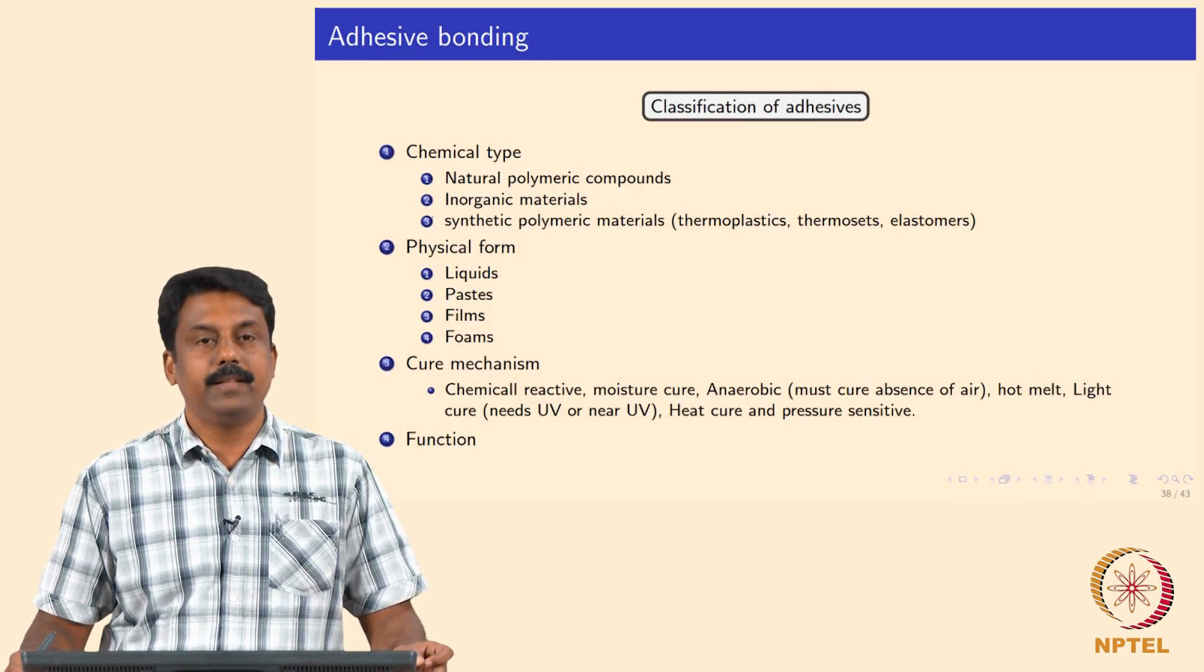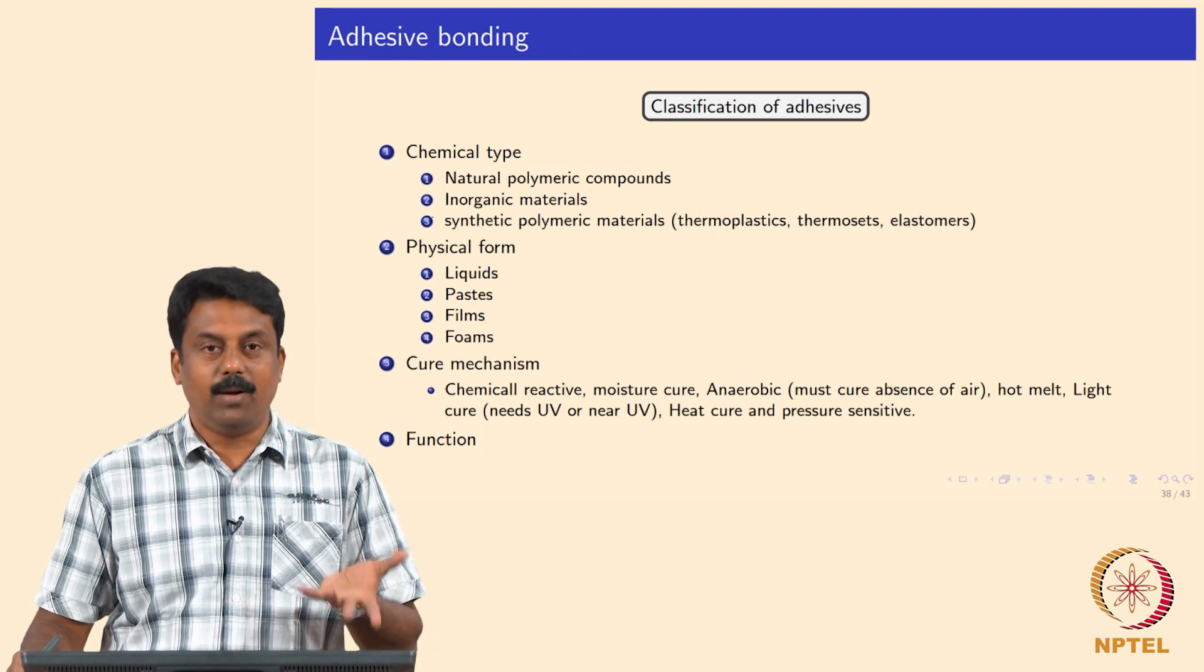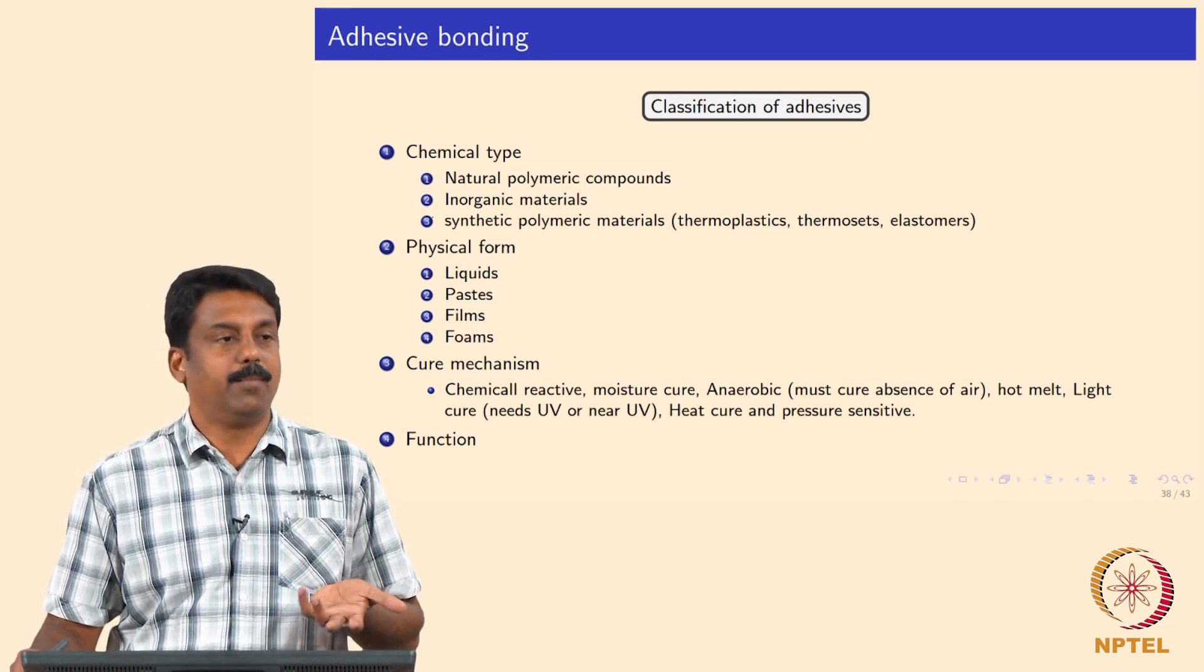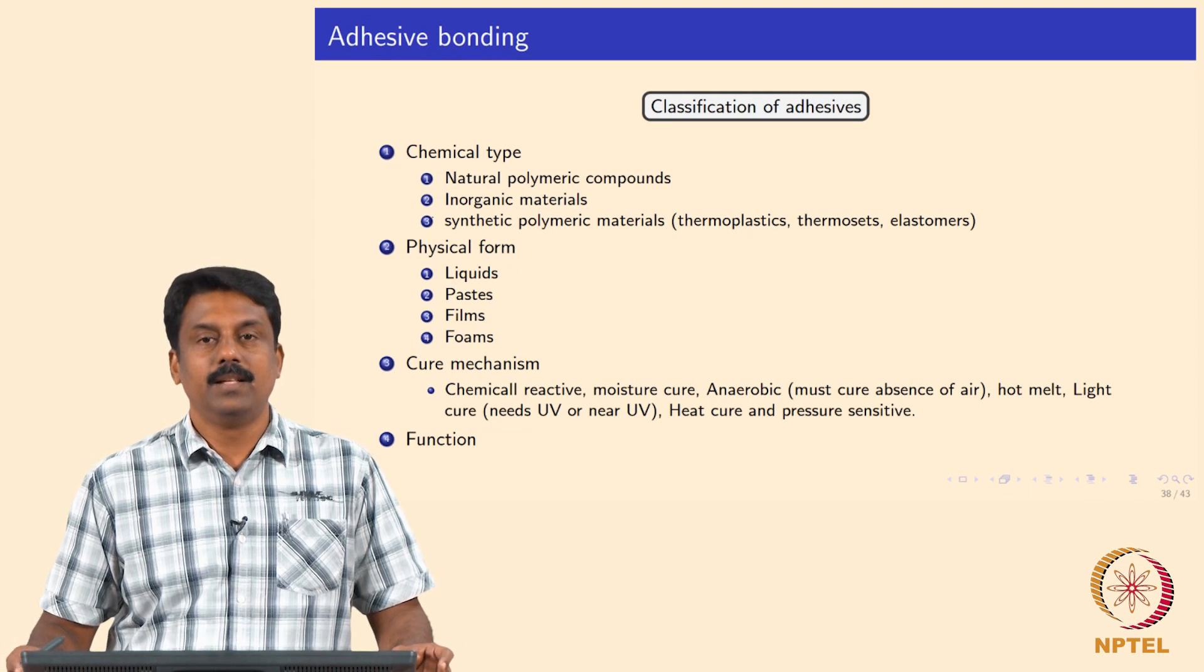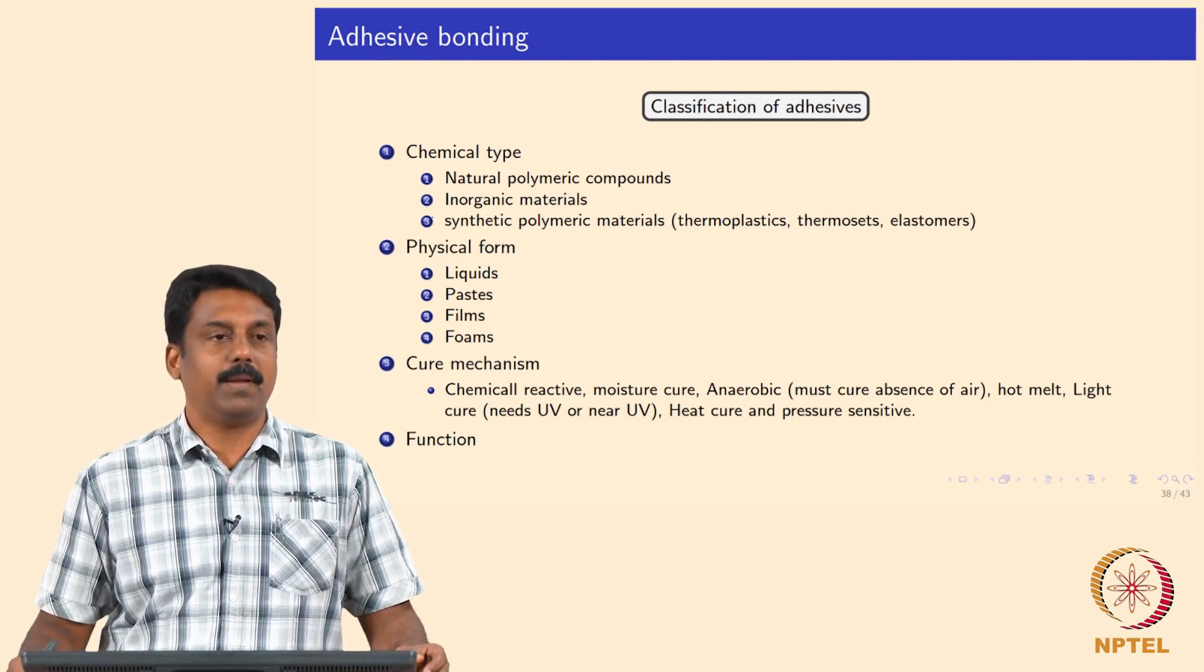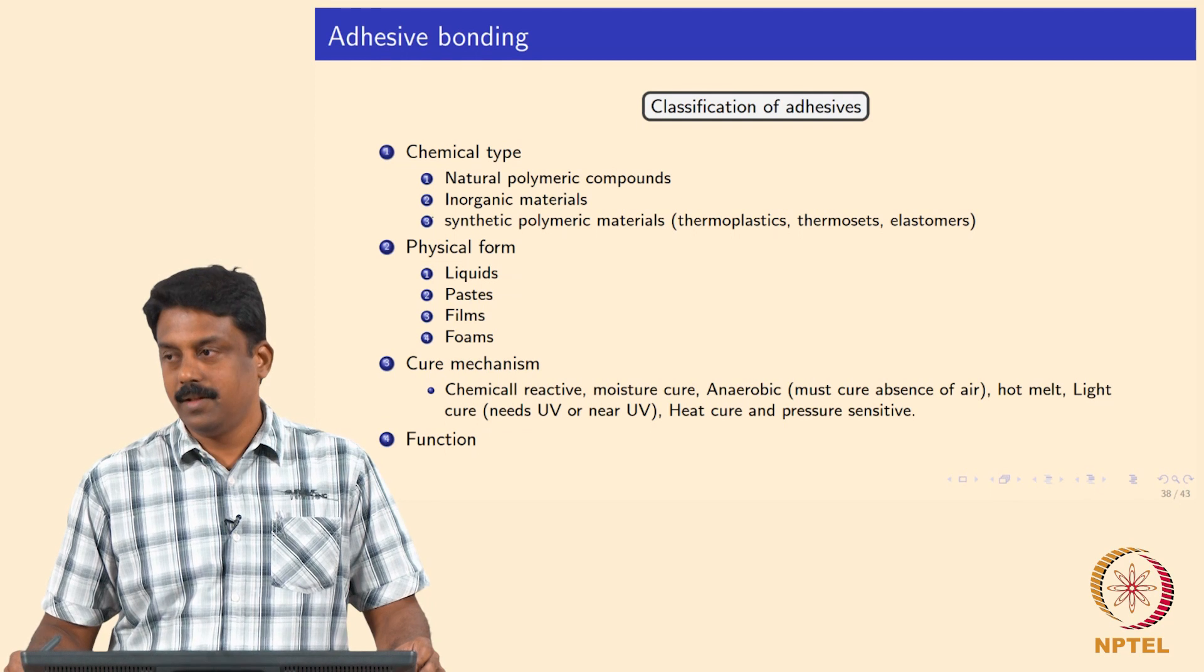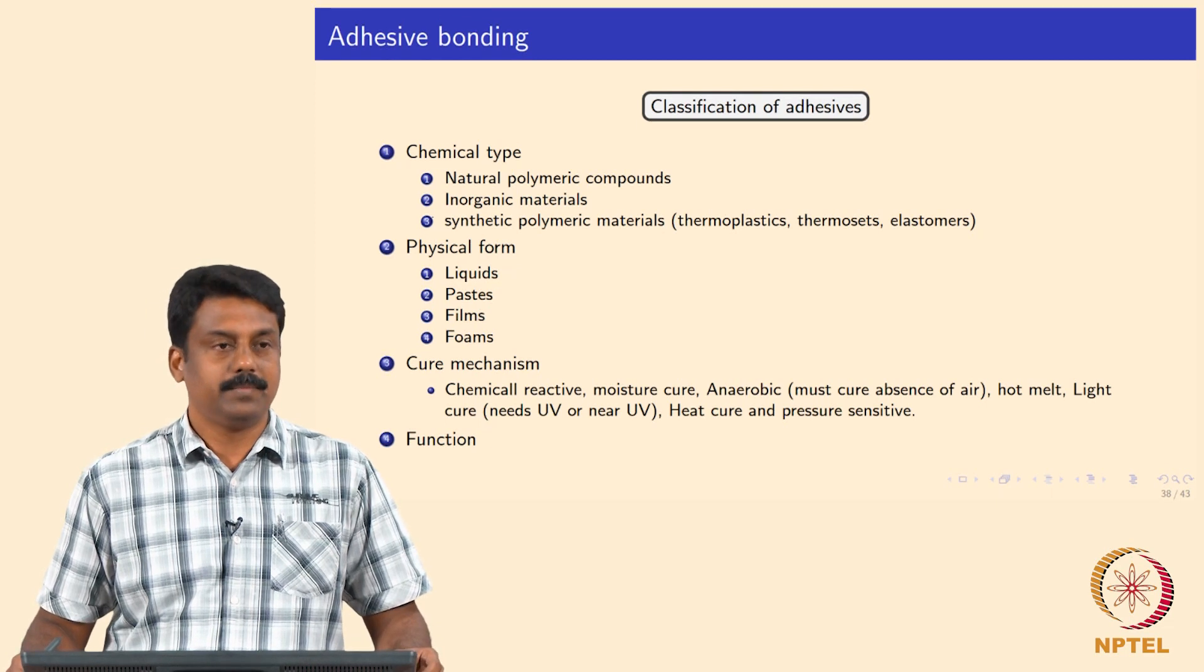How do we classify the adhesives? We can classify in various ways: by chemical type, physical form, cure mechanism, or function. The chemical types can be natural polymeric compounds, inorganic materials, or synthetic polymers like thermoplastics, thermosetting, and elastomers. Nowadays we have all high temperature glues - those are all thermoplastic materials you heat up and then deposit. It becomes hot extrusion, the process we saw, extrusion joining. You melt and then extrude the thermoplastic filler onto the joining interface.